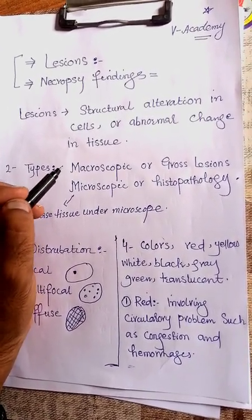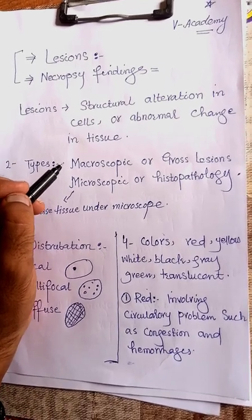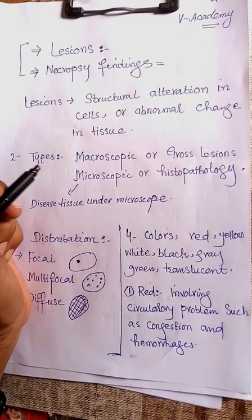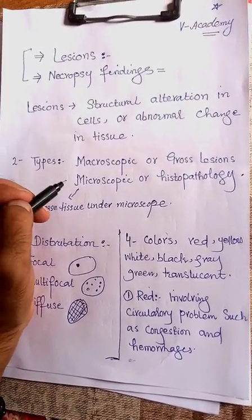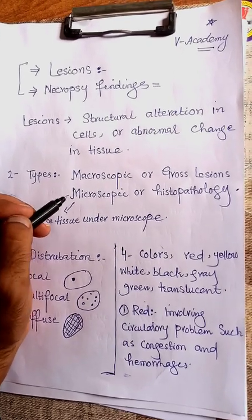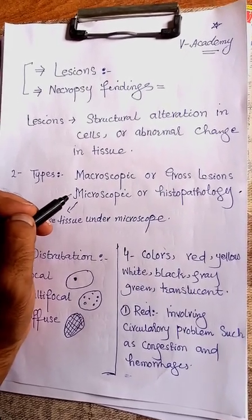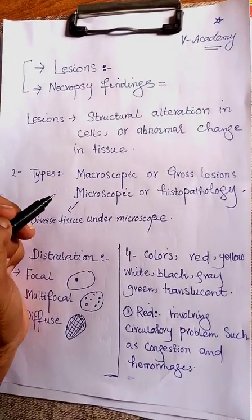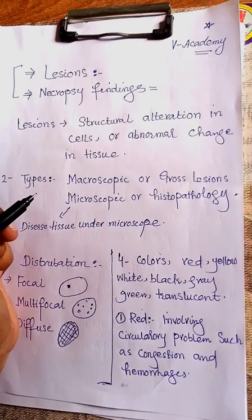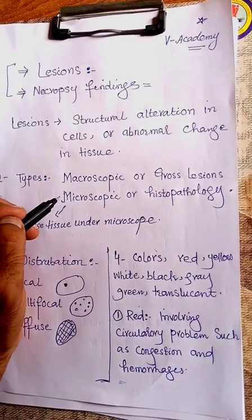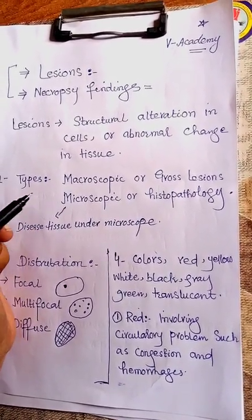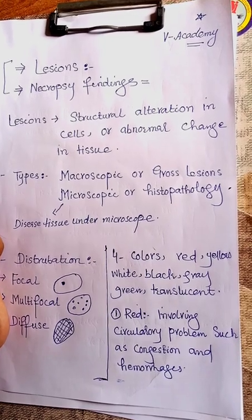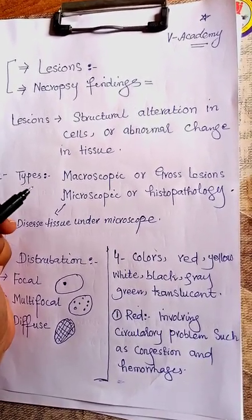Gross lesions are those which we can see with our naked eye. Microscopic lesions are those which we can see under the microscope. Now, how can we distribute them? How can we classify their structure?